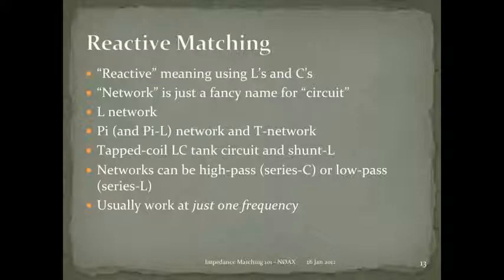At the top of the coil you have very high impedance — perhaps a couple thousand ohms. At the bottom it's connected to ground — zero ohms. Somewhere in between is 50 ohms. You just move the tap point up the coil until you hit it. Networks can be high-pass or low-pass: if the series components are mostly capacitors, it's a high-pass network; mostly inductors means low-pass.